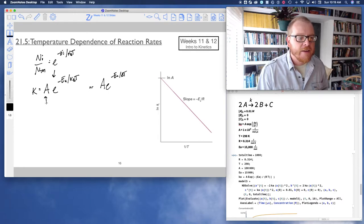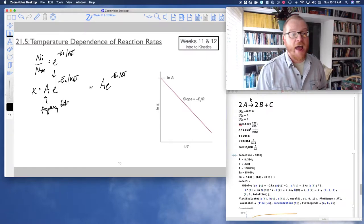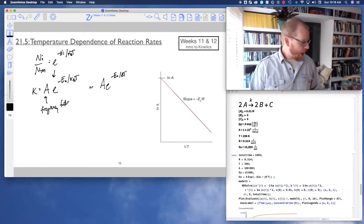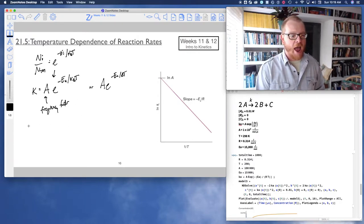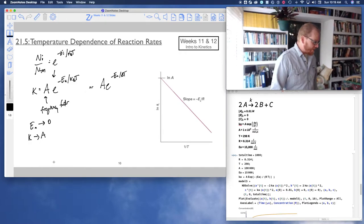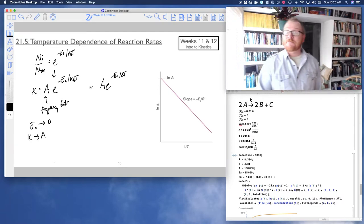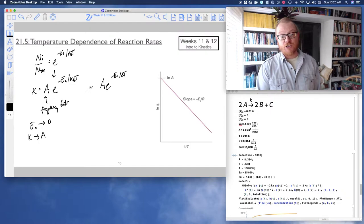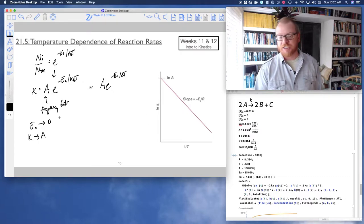This A is called the frequency factor. Now imagine in the limit as EA approaches zero—then e to the zero is just one, so that means k approaches the frequency factor. That is what we call an extremely fast reaction. In other words, if there is no activation energy or if the activation energy is very small, then k equals the frequency of collisions, so every molecular collision leads to a reaction.